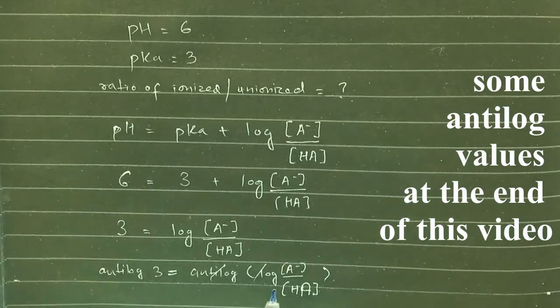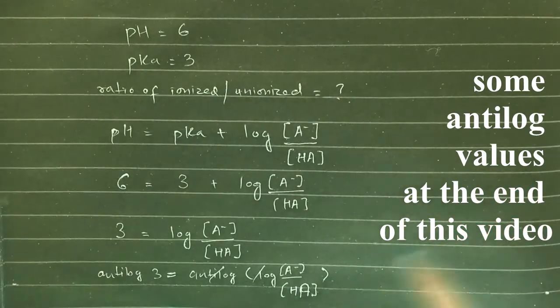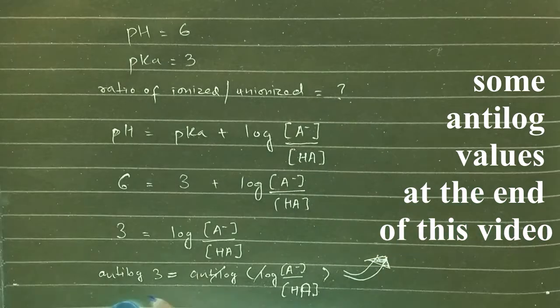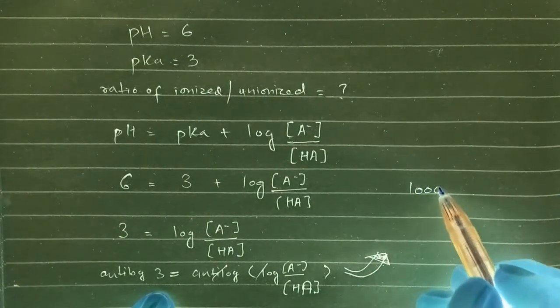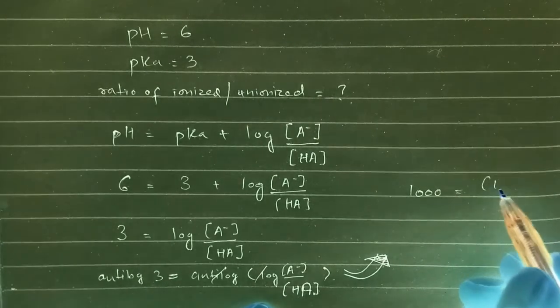And the antilog of 3 is equal to 1000 if we do it on the calculator. So antilog of 3 will be equal to 1000 and this ratio.